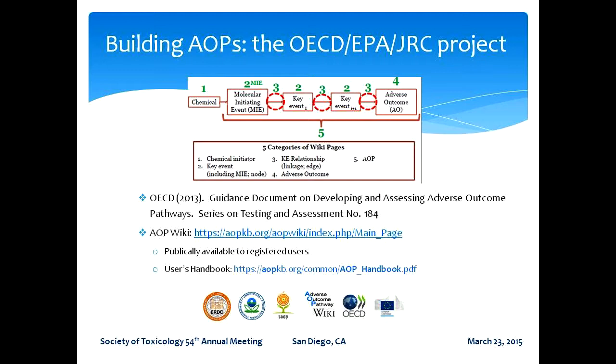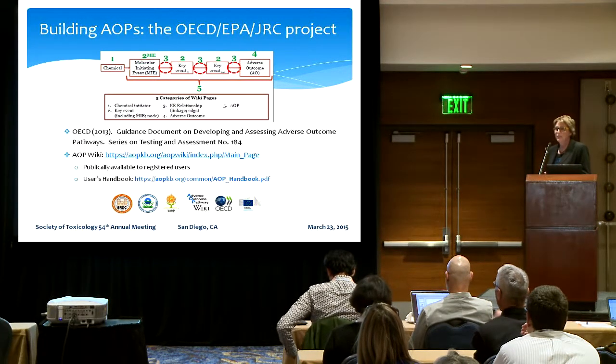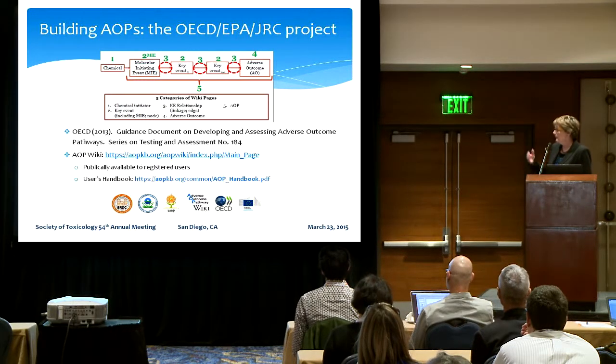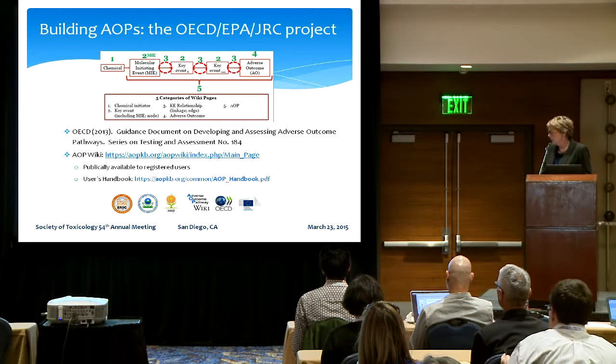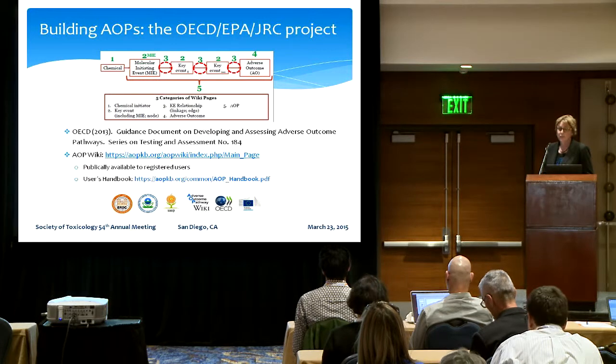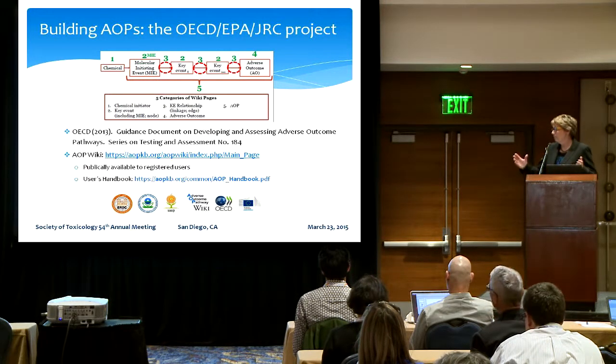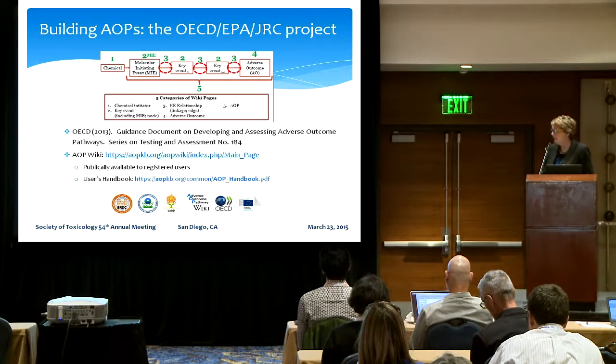The OECD has decided to take on AOPs in a rather large way, and has developed guidance along with the U.S. Army Corps, EPA, and the Joint Research Center. Together they are building an interactive database, one element of which is the AOP wiki, which you're going to hear a lot more about today. That is a piece of software that will allow you to store and collate all of the information that supports your adverse outcome pathway and the relationships between the elements. OECD has also developed a user's handbook specifically for the AOP wiki to help you enter information into the various fields.